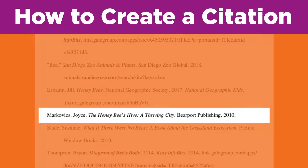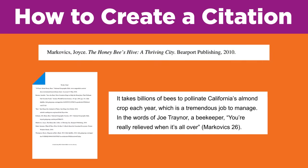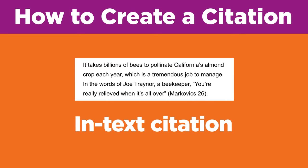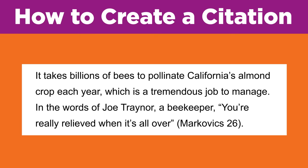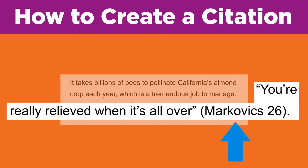All of the details for one source are called a citation. There are two places where you might include citations in your paper. Your teacher may require you to give credit for specific ideas and quotations within your paper — this is called in-text citation, and it lists the author's last name and the page number where the information was found. For example, a quote from The Honey Bee's Hive by Joyce Markovics ends with the in-text citation (Markovics 26), where Markovics is the author's last name and 26 is the page number of the quote, enclosed in parentheses.